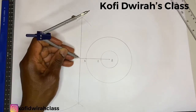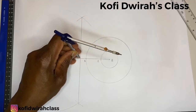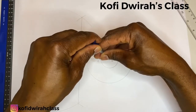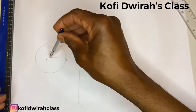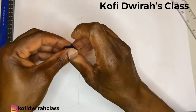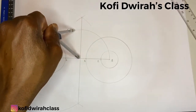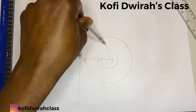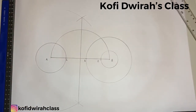With your compass, at the center of line AB, you draw a semicircle from B. You draw a semicircle at the center of line AB.